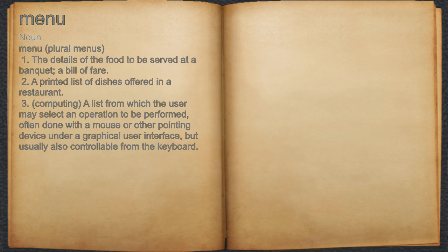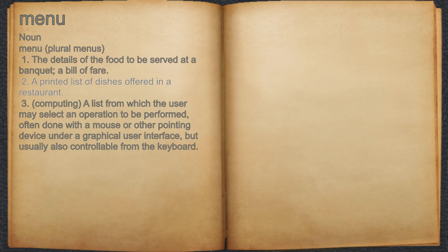Menu. Noun. 1. The details of the food to be served at a banquet, a bill of fare. 2. A printed list of dishes offered in a restaurant.